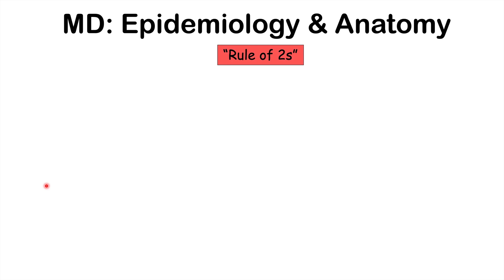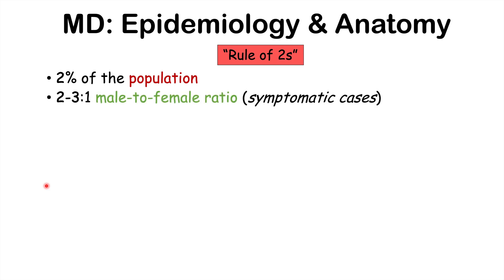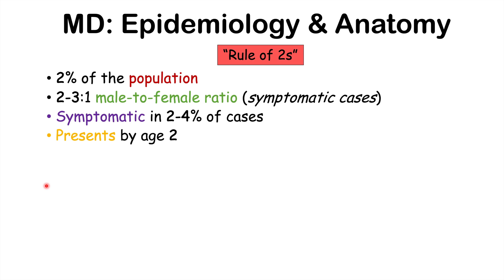Now let's talk about the epidemiology and anatomy of Meckel's diverticulum, using the mnemonic Rule of Twos. Meckel's diverticulum is estimated to occur in roughly two percent of the population. It has a two-to-three-to-one male-to-female ratio, likely because males are more often symptomatic. Symptomatic cases occur in two to four percent of all cases, and Meckel's diverticulum often presents by the age of two, making it primarily a pediatric condition.